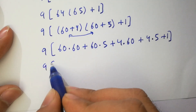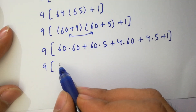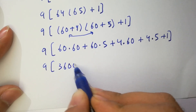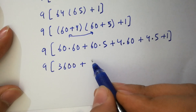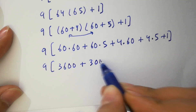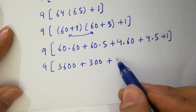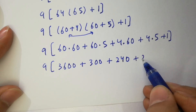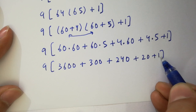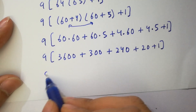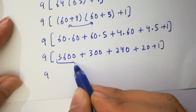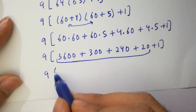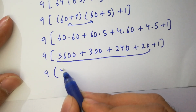Next: 6 times 6 is 36, so 60 times 60 gives 3600. 6 times 5 is 30, so 60 times 5 gives 300. 4 times 60 gives 240. 4 times 5 is 20. Adding these: 3600 plus 300 plus 240 plus 20 equals 4160, plus 1.